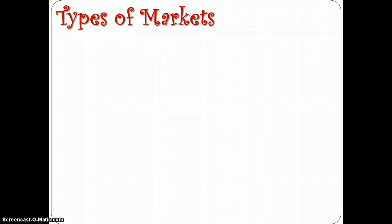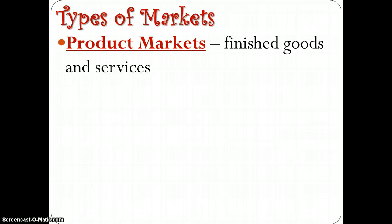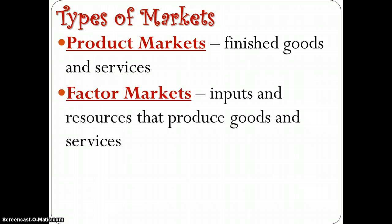When we talk about markets, there are two different types of markets that we cover in this class. The first is product markets — that's for finished goods and services, and that's really what you've been looking at over the last several weeks. All the different market structures: perfect competition, monopolistic competition, monopoly, oligopoly — those are all for product markets. The other type is the factor market, which is the market for the inputs and resources that go into making things.